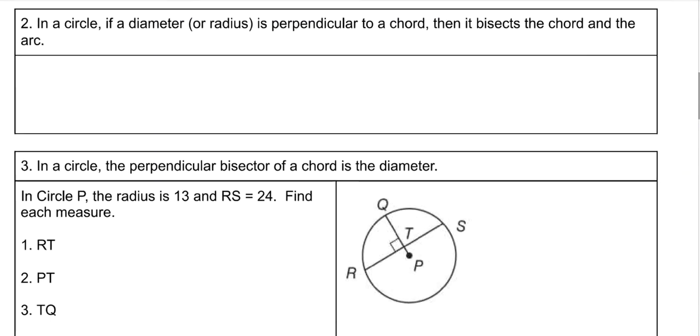Our next property says that in a circle, if a diameter or radius is perpendicular to a chord, then it bisects the chord and the arc. Okay, so what that means is we have a circle. And here's my center, and we have a diameter. So this is my diameter. So if your diameter is perpendicular to a chord, so this will only work in this situation where they are perpendicular. So this is what we know ahead of time.